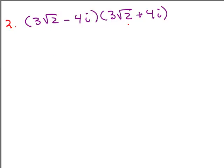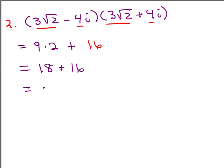The second problem is a multiplication problem, and you might notice these are complex conjugates — that would be the easiest approach. Since they're complex conjugates, you just square the a term. So that's 3 square roots of 2 times 3 square roots of 2, which is 9 times 2, because 3 squared is 9 and square root of 2 squared is 2. Plus 4 times 4, which is 16. So 18 plus 16 equals 34.